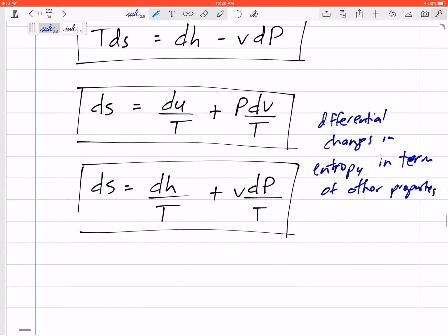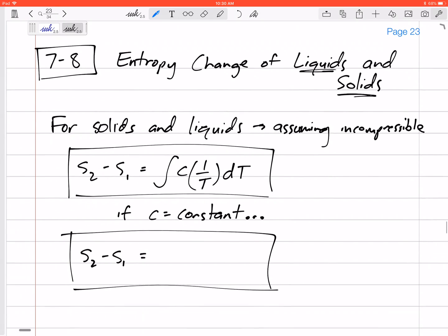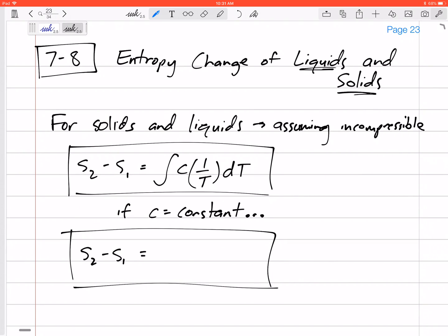And we have this DS in terms of other properties in terms of H and pressure and temperature and DU. Alright. So we're going to take this. And you know that DU is really CV. And DH is related to specific heats. And DH is CP.